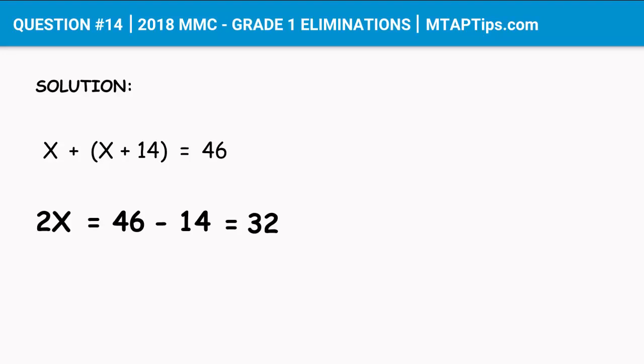2X means 2 times X. Now the number 2 on the left side of the equation beside the X, if we're going to move that on the other side, we're going to change the operation.